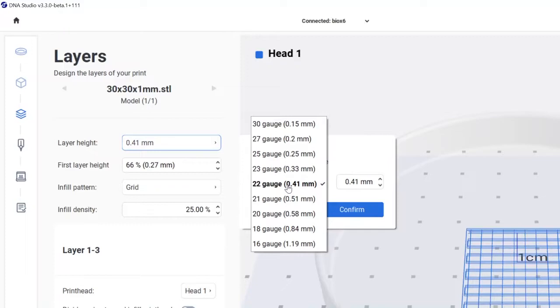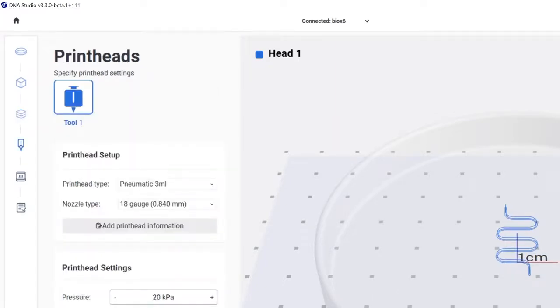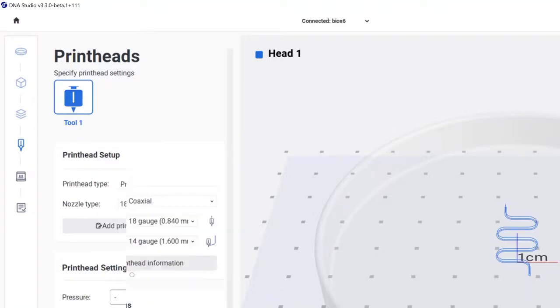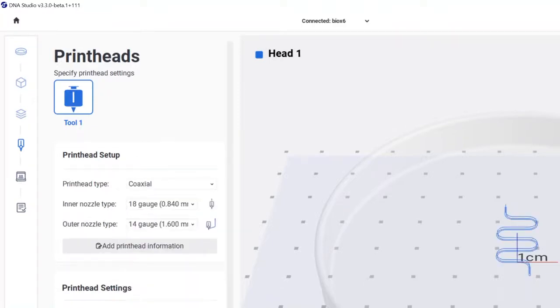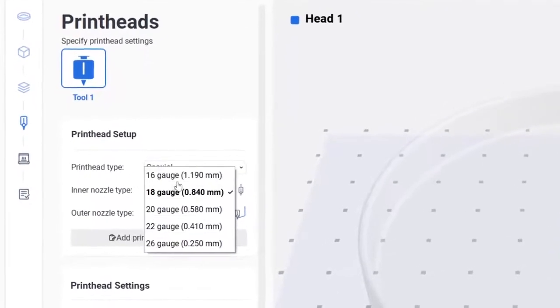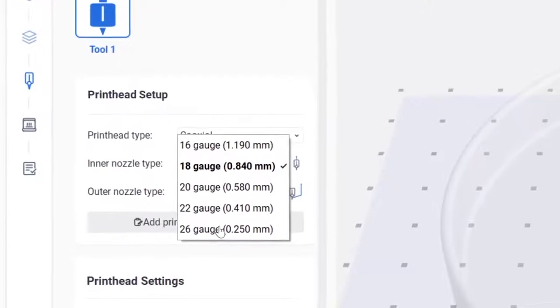Specify the layer height based on your selected nozzle, infill pattern and density, and the printhead type. Select the coaxial from this list. Then select the size for inner nozzle and outer nozzle based on the gauge size that is written on the surface of the nozzle.